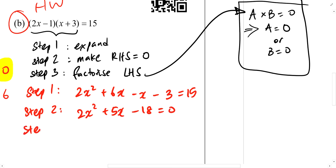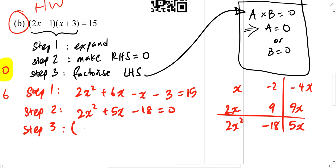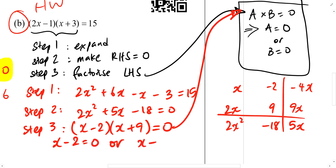Next step 3 is to factorize. So 2x square plus 5x minus 18. We have x and 2x. Here we have 9 and negative 2. 2x square minus 18. 9x minus 4x. So we add 5x. So it is factorized to become x minus 2, 2x plus 9 equals to 0. Now, from here, I will use this property which tells me that x minus 2 equals to 0 or 2x plus 9 equals to 0. Therefore, x equals to 2 or x equals to negative 9 over 2. Thank you.